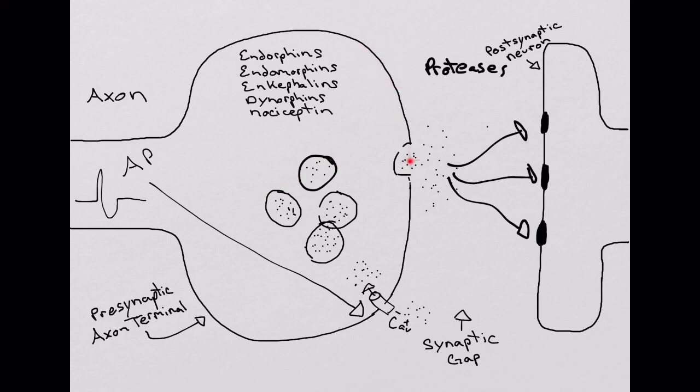There's no transporters along the presynaptic axon terminal to bring it back into the cell. And there's no specific enzymes that will actually metabolize these different transmitters. They are actually just broken down by proteases within the synaptic gap or they stimulate the receptors on the effector cell. And there you have it.